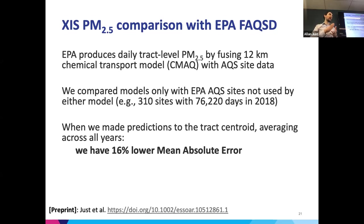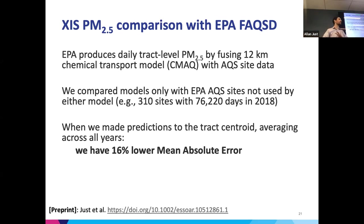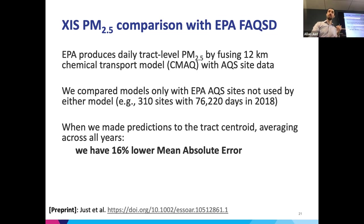We have 16% lower mean absolute error when we average over all the years. This metric is also re-weighted to account for the entirety of the country using an inverse weighting related to the amount of area each monitor is closest to — what's called a Voronoi diagram. We're also able to make predictions anywhere we want, arbitrary points, because we have continuous fields built into our model.